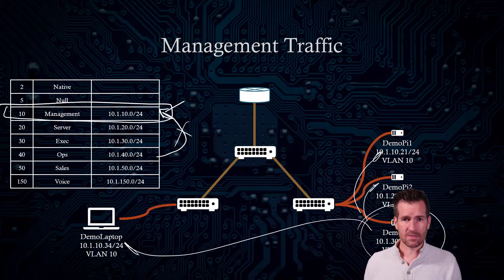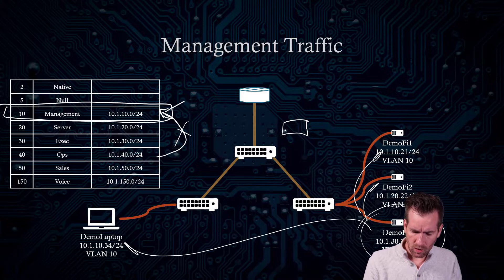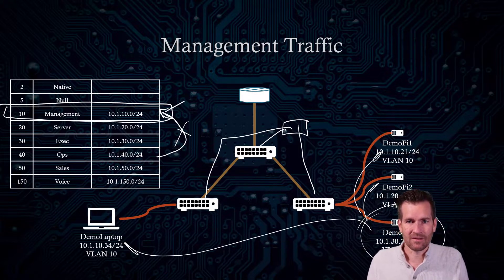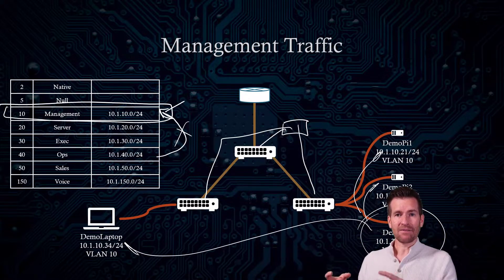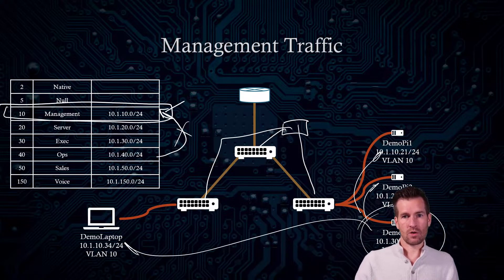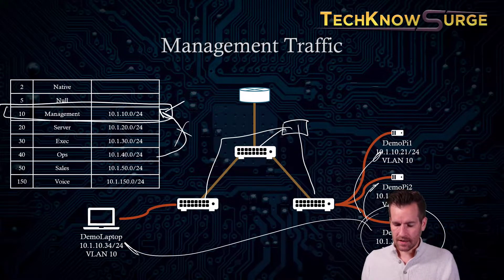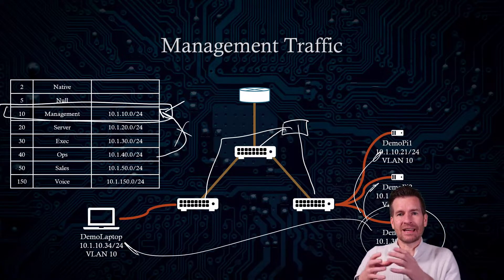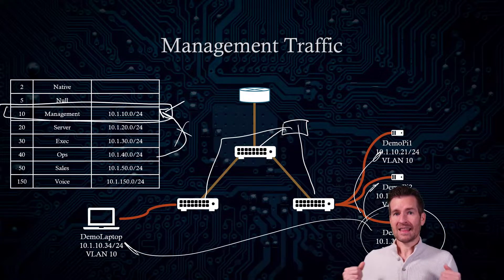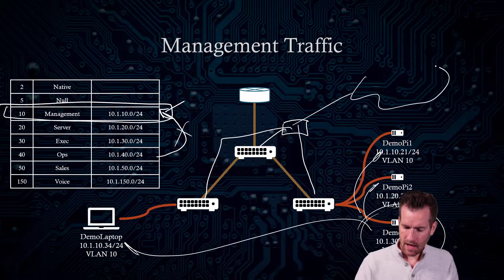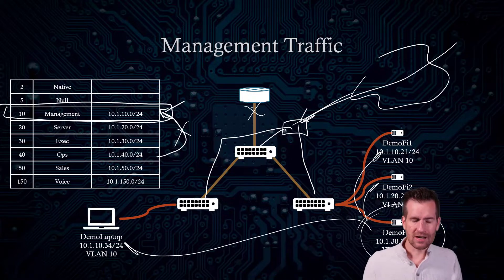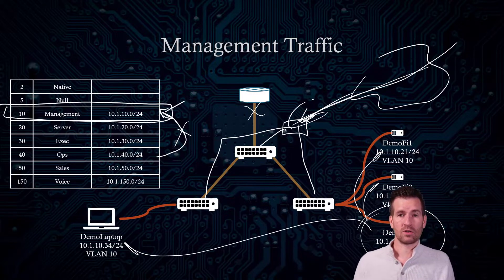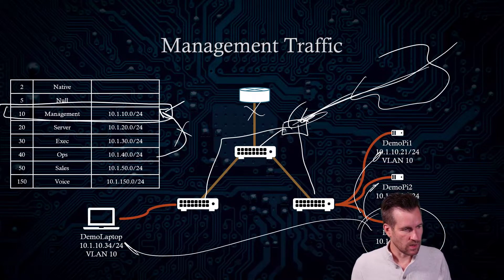Another option is out-of-band management, which means having a whole separate physical network with dedicated hardware that manages your different devices. This takes management off the VLAN entirely — you might use a separate switch or hardware that connects via console cable. An added advantage is that if your main network or internet goes offline, you still have access into your network for troubleshooting. Just make sure that out-of-band management network is secured as well.